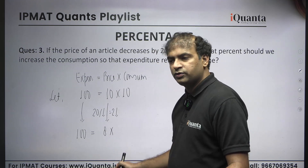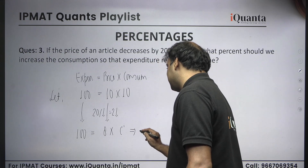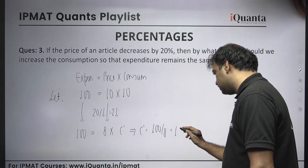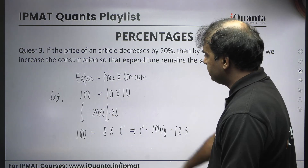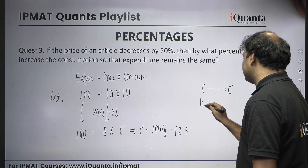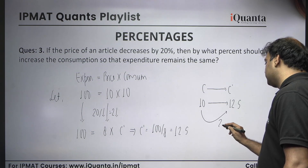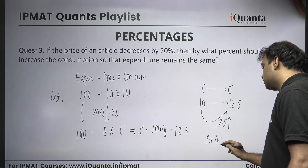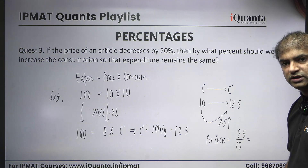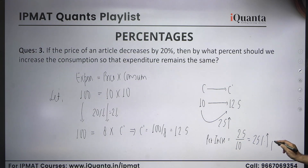New consumption = C dash. Using the formula: 100 = 8 × C dash, so C dash = 100 ÷ 8 = 12.5. Original consumption was 10, new consumption is 12.5 — increase is 2.5. Percentage increase = 2.5 ÷ 10 × 100 = 25 percent. So the consumption should increase by 25 percent.